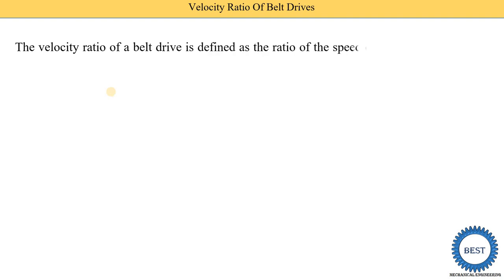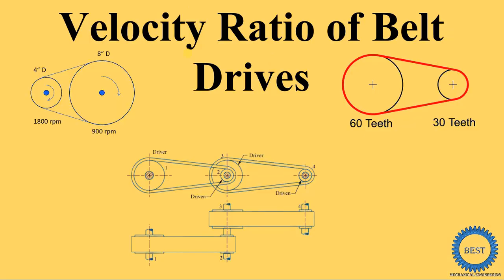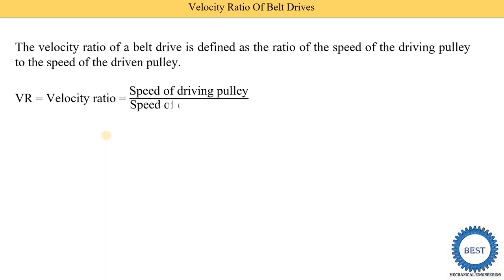First we find out the velocity ratio for a simple belt drive. Velocity ratio is the ratio of two velocities. The velocity ratio of belt drive is defined as the ratio of the speed of the driving pulley to the speed of the driven pulley. The speed of the driving pulley is denoted as N1, and the speed of the driven pulley is denoted as N2. So velocity ratio is equal to N1 upon N2.